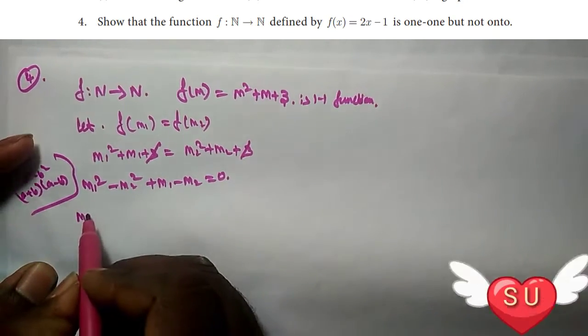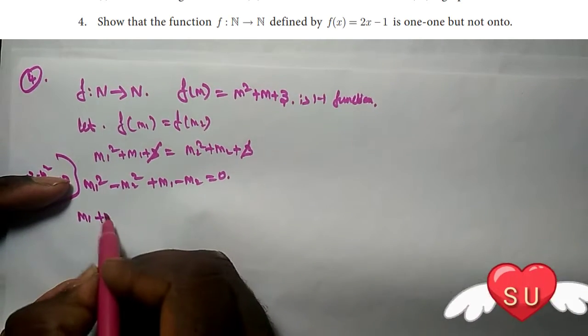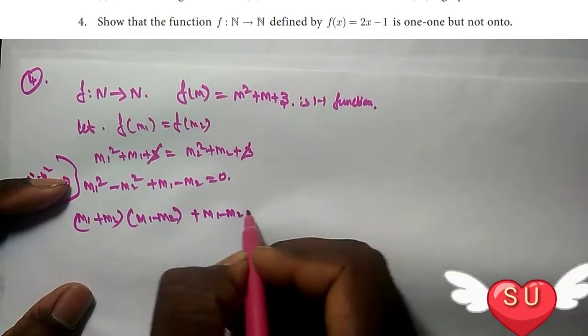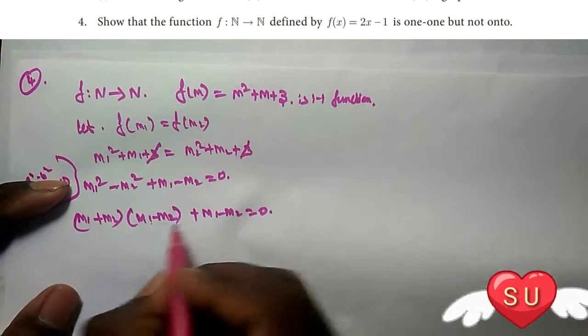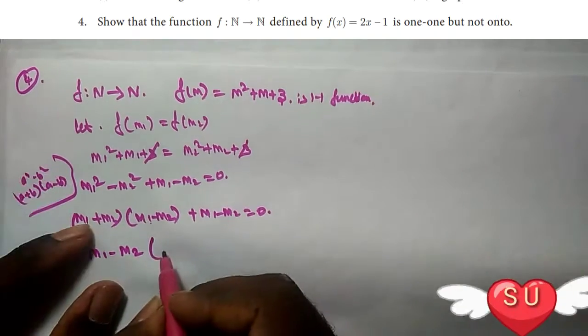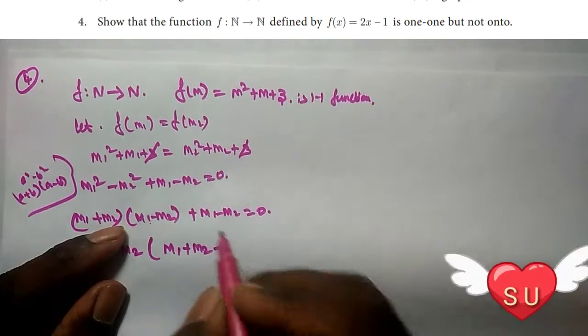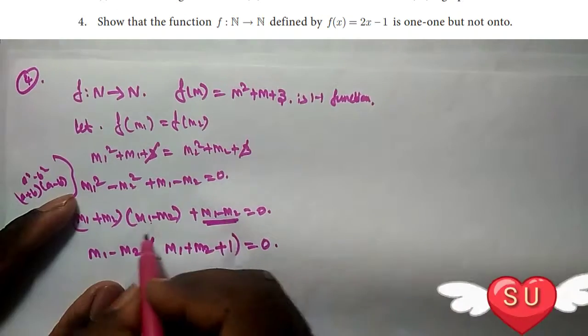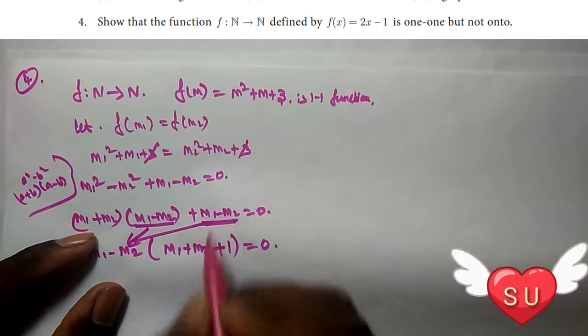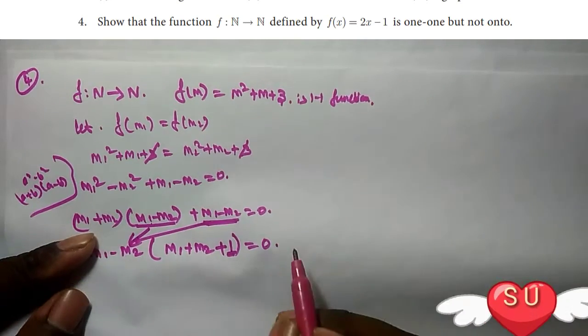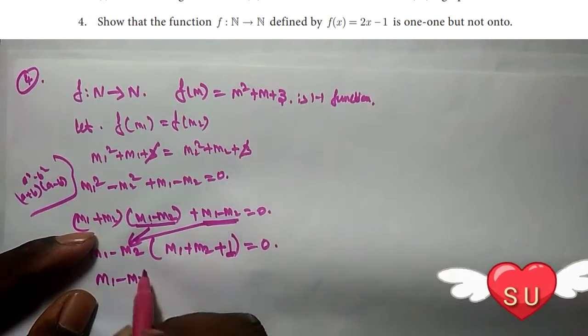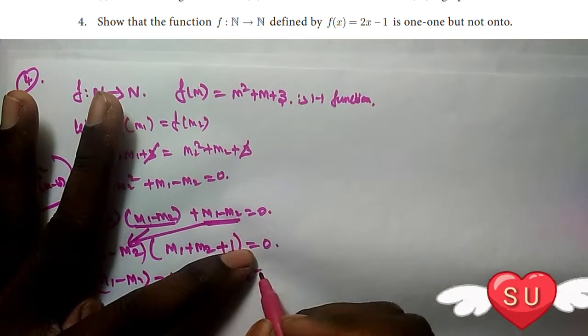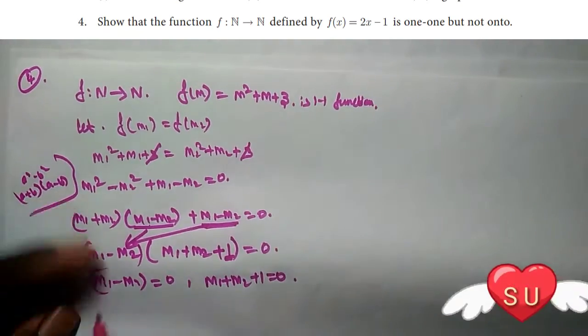This gives us (m1 plus m2)(m1 minus m2) plus (m1 minus m2) equals zero. We can factor out the common term (m1 minus m2) to get (m1 minus m2)(m1 plus m2 plus 1) equals zero.